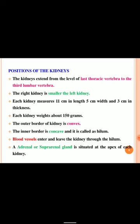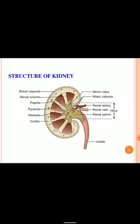The structure of the kidney consists of major parts: renal capsule, renal column, papilla, pyramid, medulla, cortex, major calyx and minor calyx, then renal artery, renal vein and renal pelvis. Through the renal pelvis, blood vessels enter the kidneys and connect to the ureter.